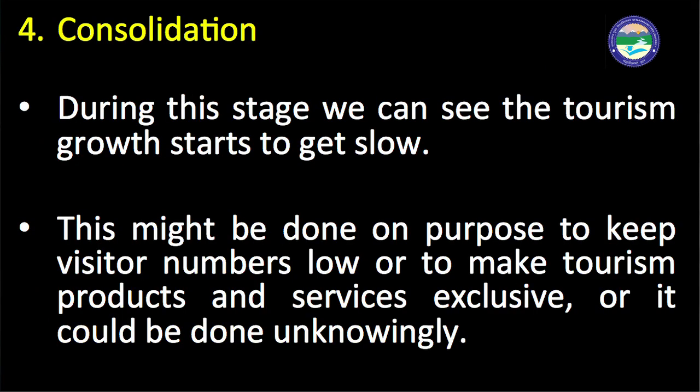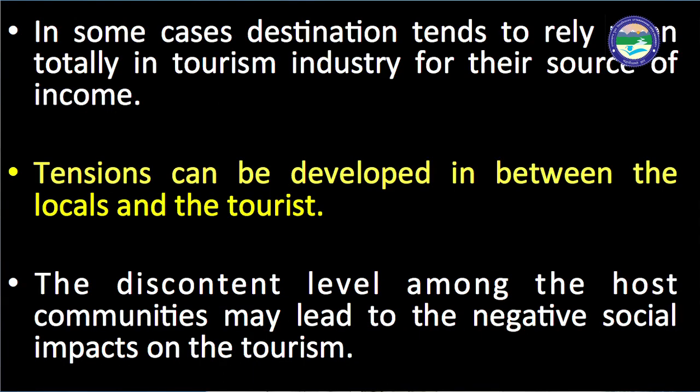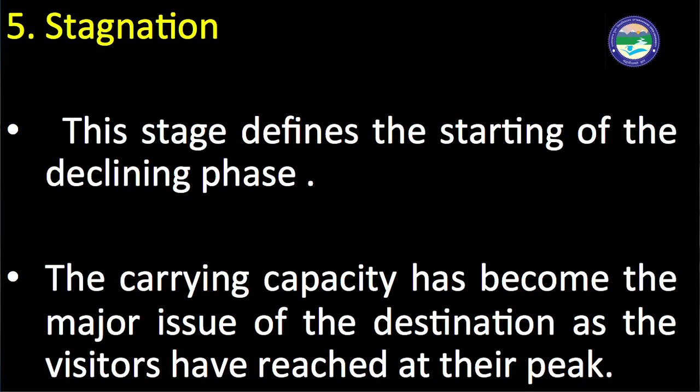The fourth stage is the consolidation stage. During this stage, tourism growth starts to slow. This might be done on purpose to keep visitor numbers low or to make tourism products and services exclusive, or it could happen unknowingly. In some cases, destinations tend to rely totally on the tourism industry for their source of income. Tensions can develop between locals and tourists, and discontent among host communities may lead to negative social impacts on tourism.